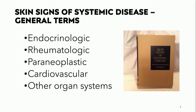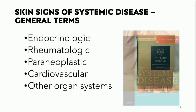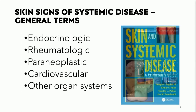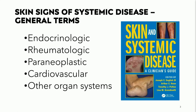We look at this from the perspective of cutaneous manifestations of endocrinologic disease, rheumatologic disease, paraneoplastic syndromes, cardiovascular conditions, and those affecting other organ systems. There are a variety of texts, including the landmark publication by Erwin Braverman from Yale, and Callen's book on systemic disease, among several others.